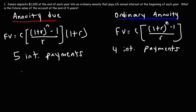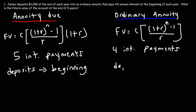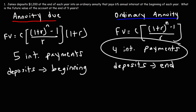Make sure you understand that for an annuity due, the deposits are made at the beginning of each time period, whereas in an ordinary annuity, the deposits are made at the end of each time period. Therefore, one interest payment in this type of annuity will be missed, and so its value will be less.